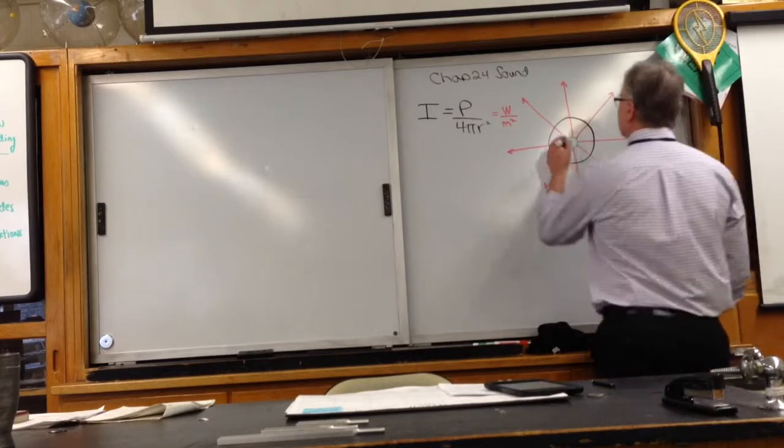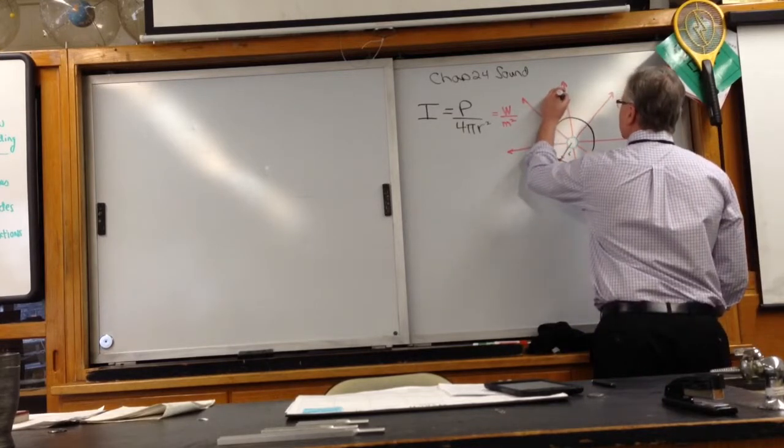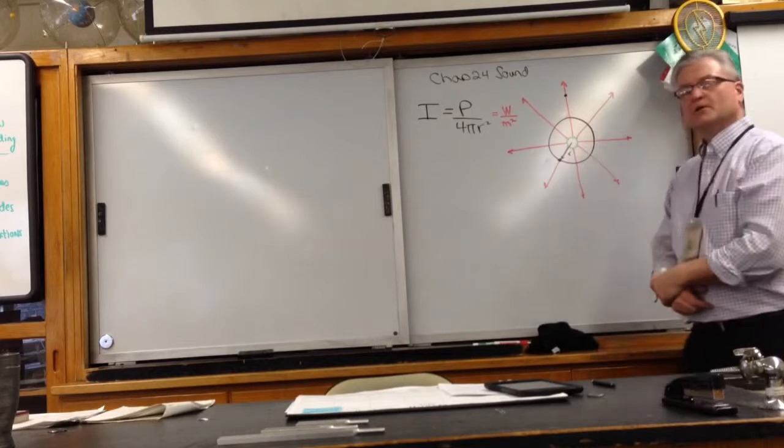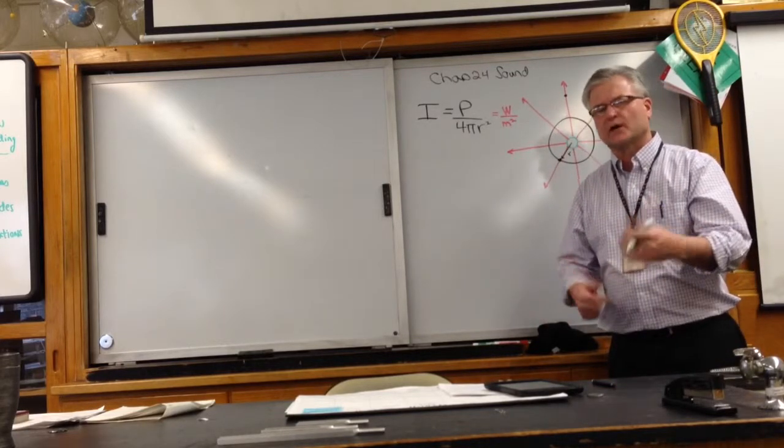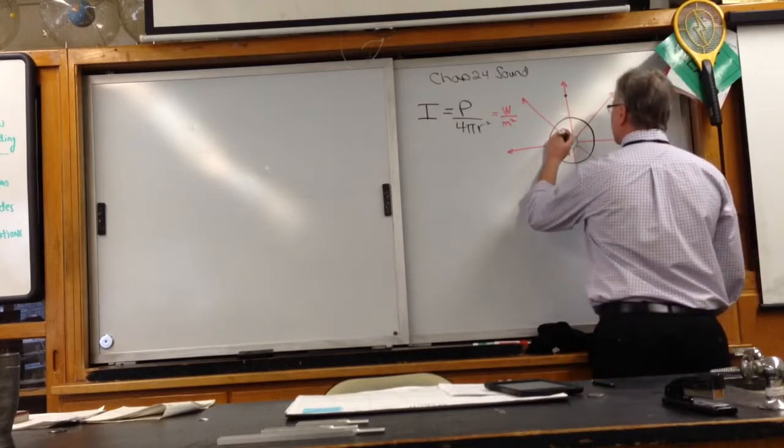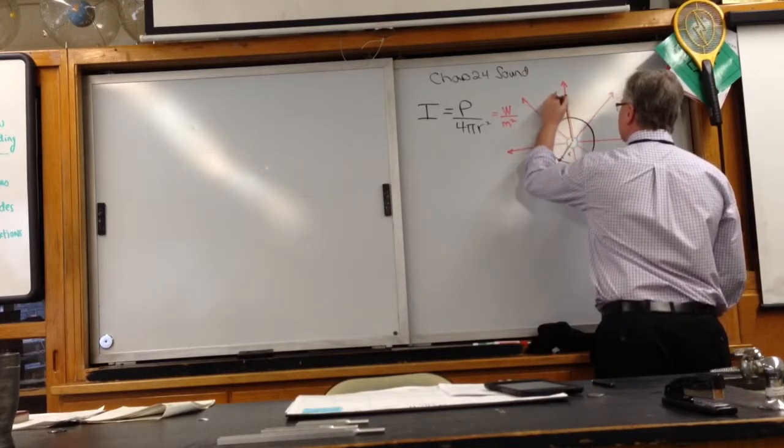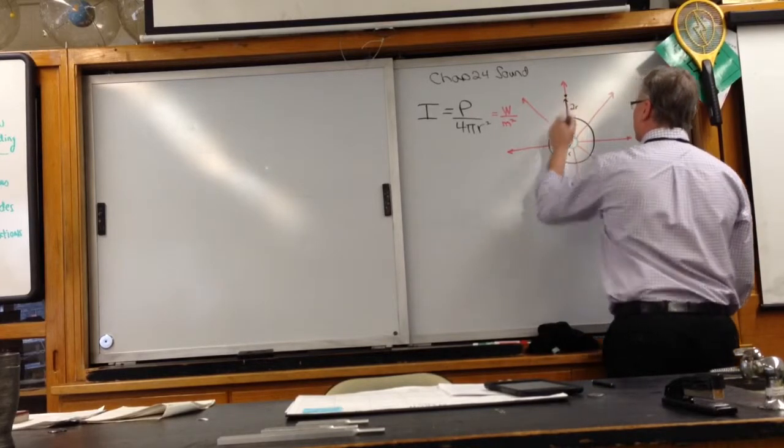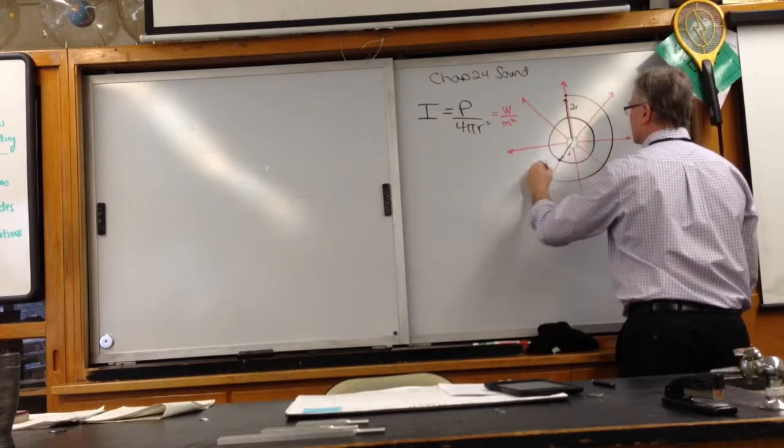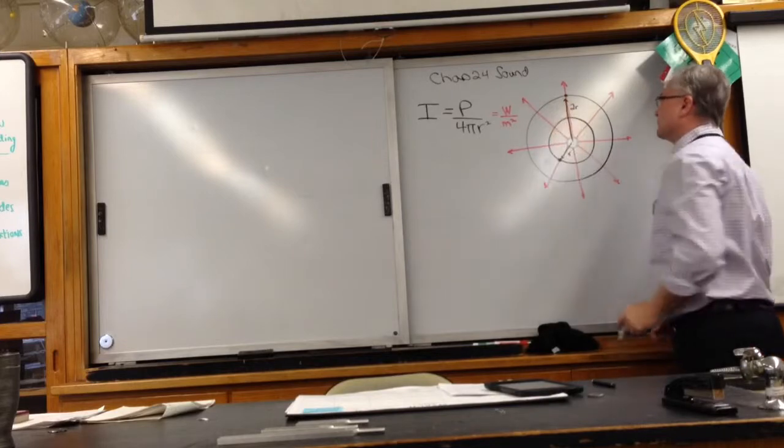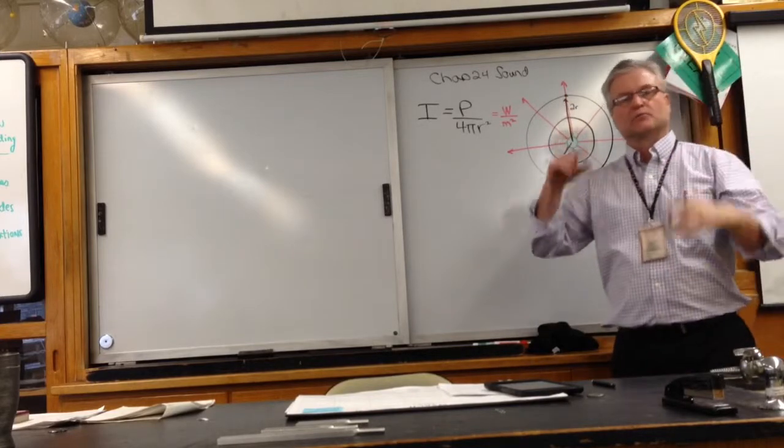Now suppose I change where I'm standing. Suppose I'm standing out here. Notice that the distance that I'm away from it is farther. Let's say it's double, so the distance from where I propagated the sound is now 2R. So I'll draw a circle around there, and the sphere when it arrives spread out is quite a bit bigger.